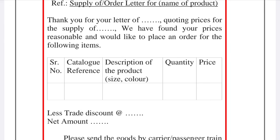In the order letter, the product details are placed in a box or table. The box contains: serial number, catalog reference — where you can write a code such as AB, AC, BC — this catalog reference is optional. Then you add description of the goods or description of the product, including size and color of the product, followed by quantity and price. This box format is very common in order letters.